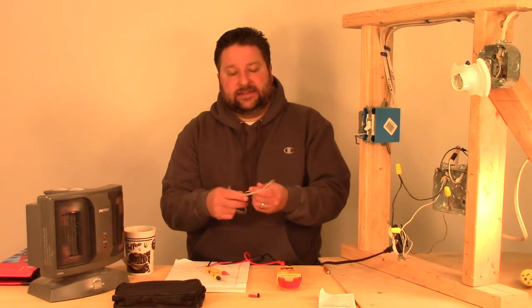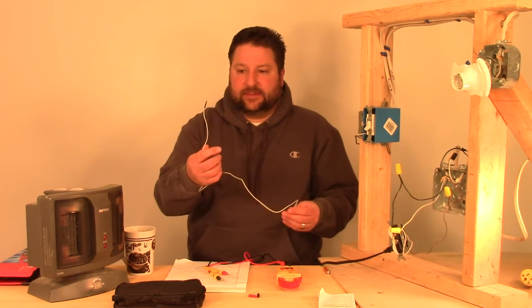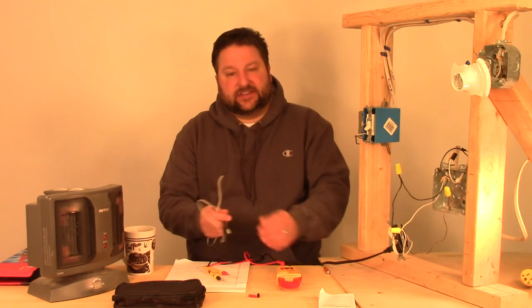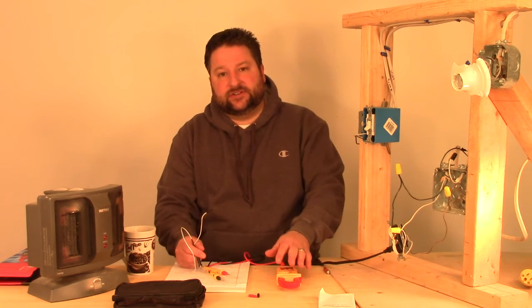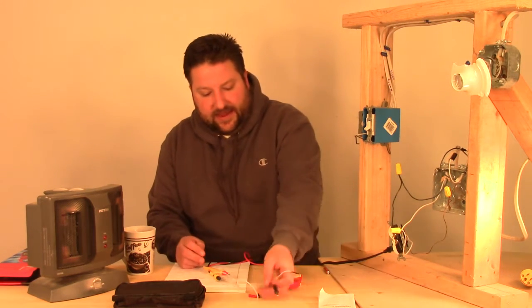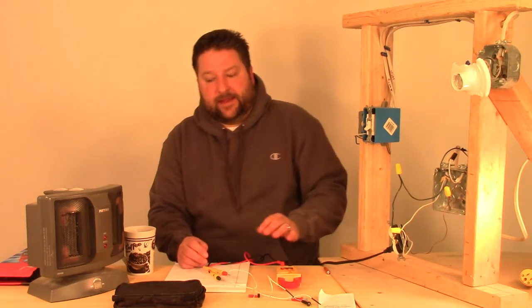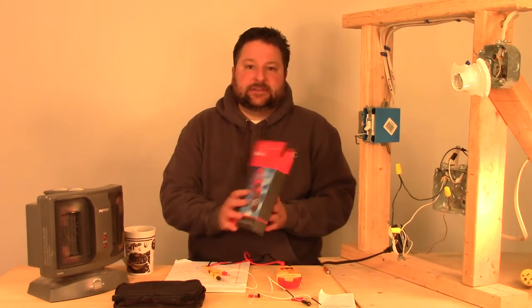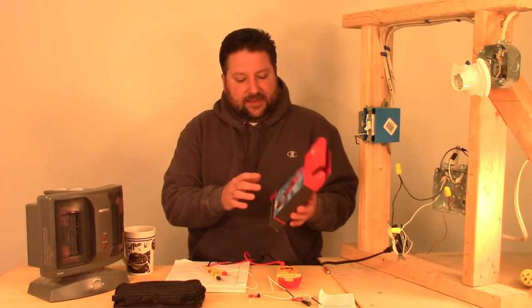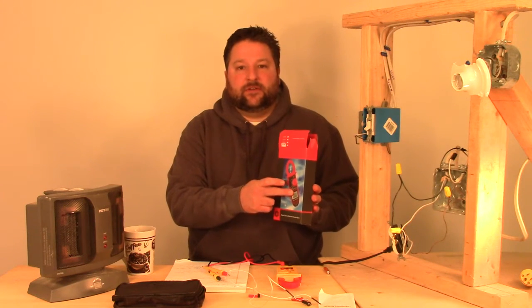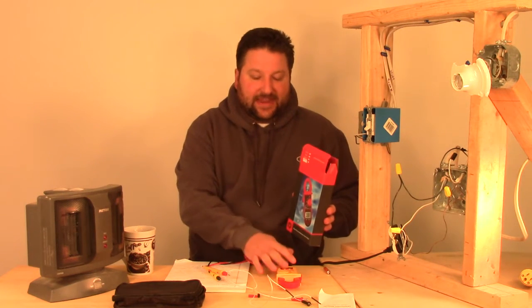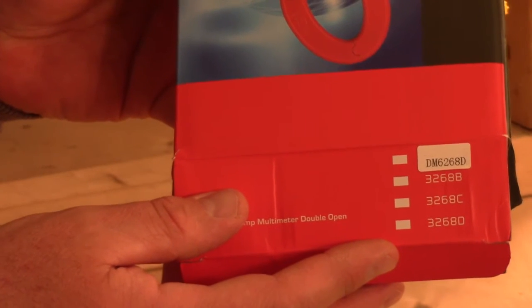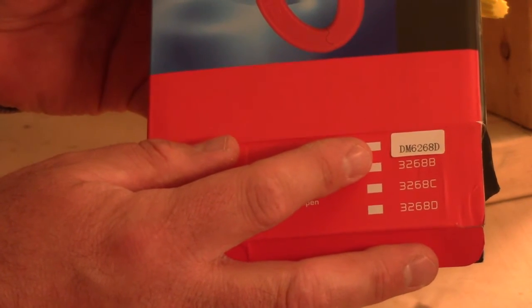It comes with a temperature testing probe. This is because there's a setting on there to check temperature in Celsius or Fahrenheit. It has a manual and it comes with a bag. It also comes with a box. This is the box it was shipped in. It's a different looking meter on the box cover than I got. The sticker is the right information, the DM6268D.